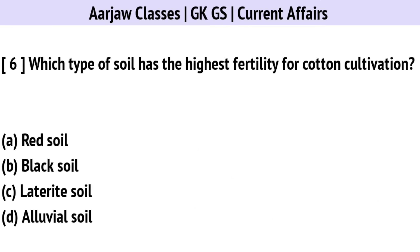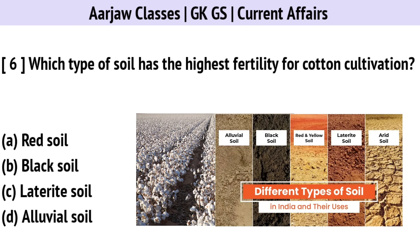Which type of soil has the highest fertility for cotton cultivation? The correct option is B — Black Soil.